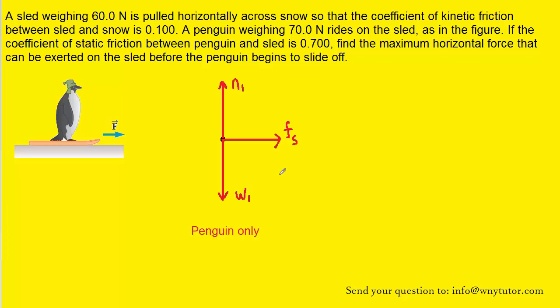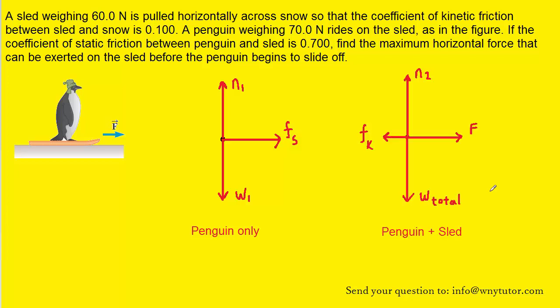When the object is the penguin only, we have the weight of the penguin acting downward, the normal force acting upward, and then a static frictional force propelling the penguin to the right. More specifically, it's the static frictional force between the penguin and the sled itself.